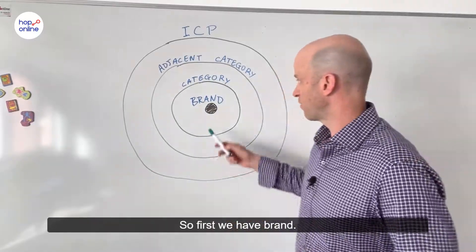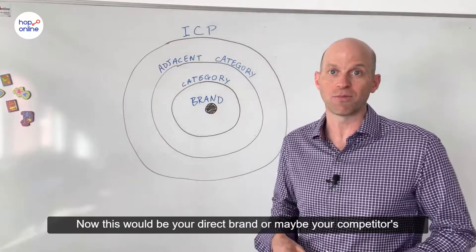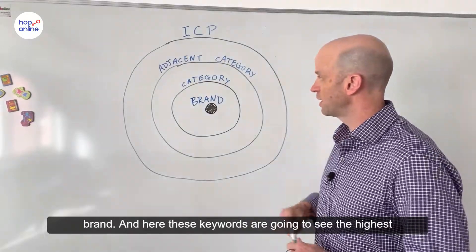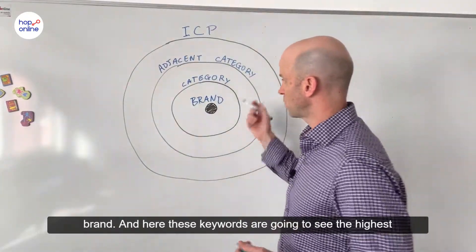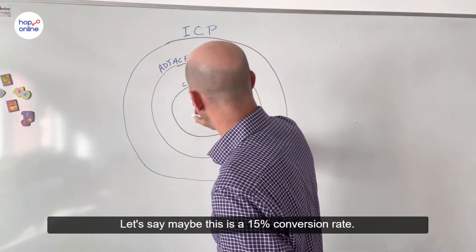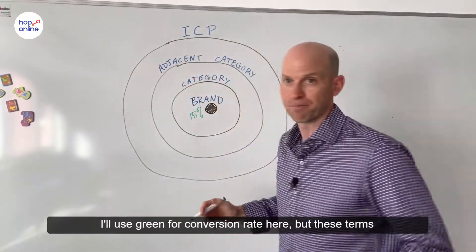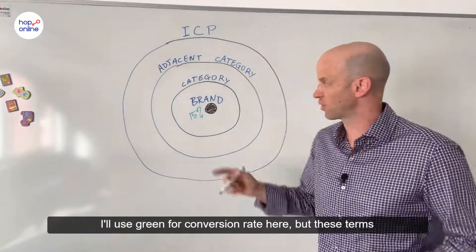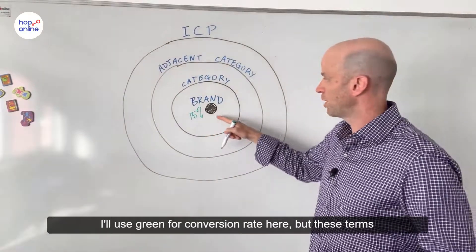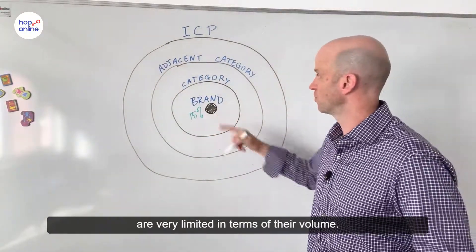So first we have brand. Now this would be your direct brand or maybe your competitor's brand. And here these keywords are going to see the highest conversion rate — let's say maybe 15% conversion rate. But these terms are very limited in terms of their volume.